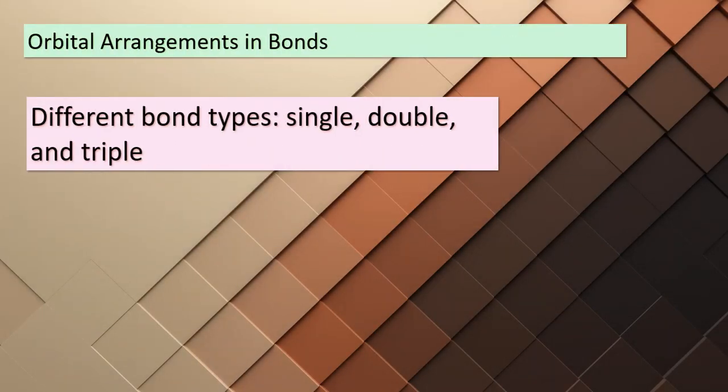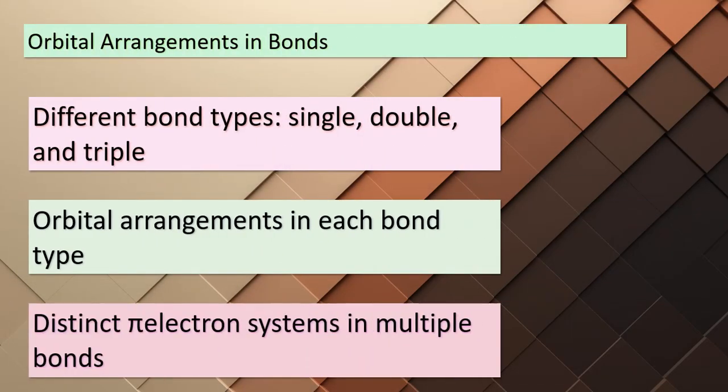Let's embark on a journey into the intricate world of orbital arrangements and bonds. In our pursuit of understanding chemical interactions, we encounter various types of bonds: single, double, and triple. These bonds come with unique orbital arrangements that dictate their behavior and properties. In a single bond, atoms share one pair of electrons, forming a sigma bond.